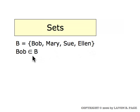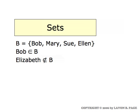This is a symbol that means 'is an element of,' so you read this expression as 'Bob is an element of the set B.' This is the negation of that symbol. Elizabeth is not an element of the set B — Elizabeth is not one of the elements that constitutes the set.